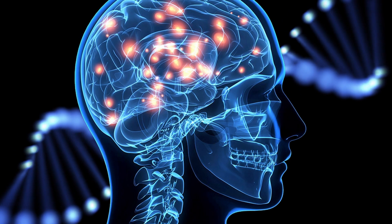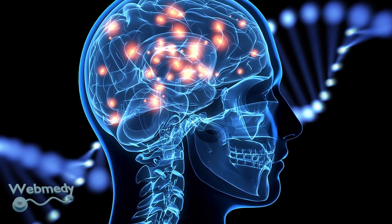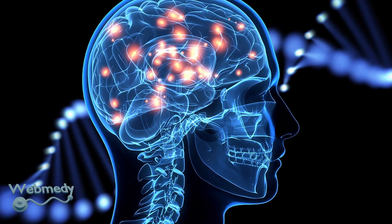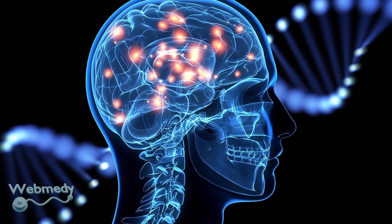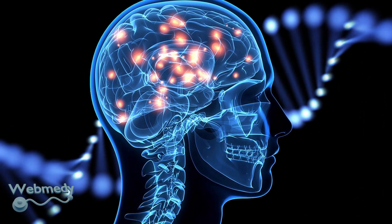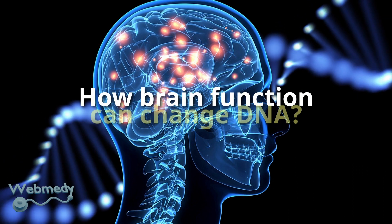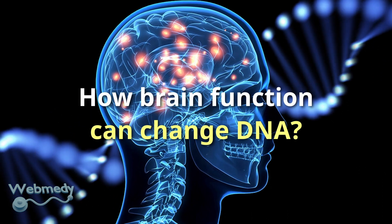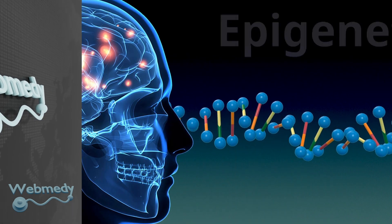The relationship between DNA and brain function is complex and multifaceted. While DNA provides the blueprint for brain development and function, brain function can affect DNA as well. Let's take a look at how brain function can affect DNA through epigenetic modifications.